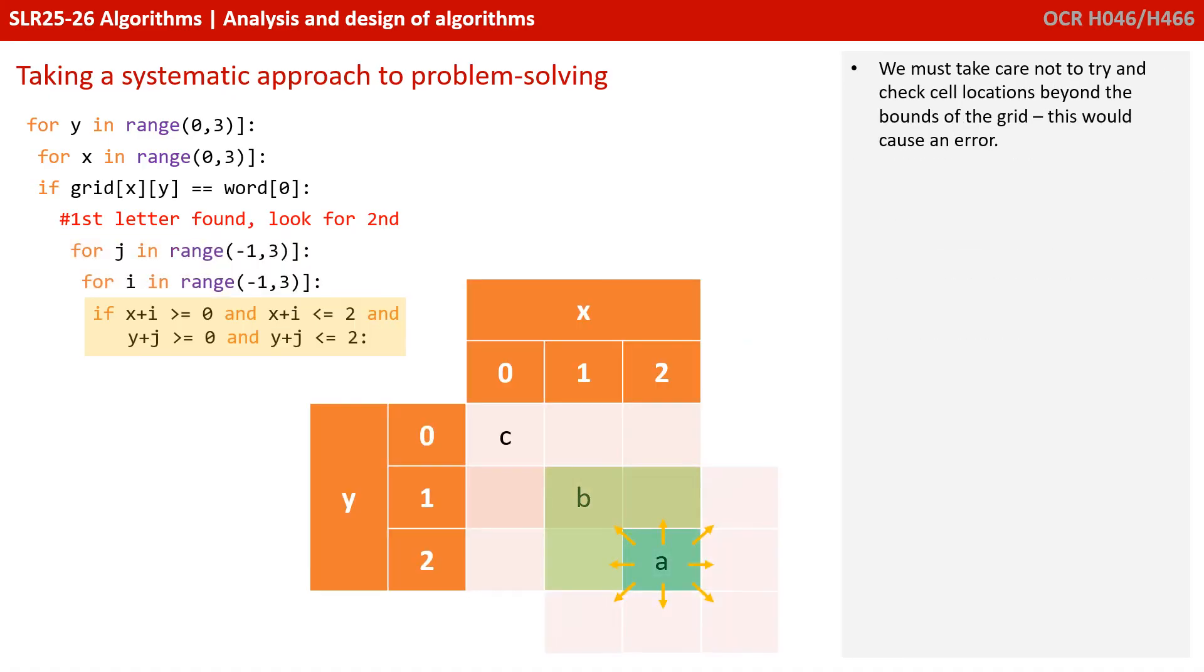When we do this, there's a danger that the cells we end up checking are off the edge of the grid. And so we need to make sure we keep track of that, otherwise we're going to get an error when we run our program. So we need to be saying if X plus the offset is greater than or equal to 0, and X plus the offset is less than or equal to 2, and Y plus the offset is greater than or equal to 0, and Y plus the offset is less than or equal to 2, then we're OK to check if that's a letter in the grid. Otherwise, we can't because it would be outside the bounds.